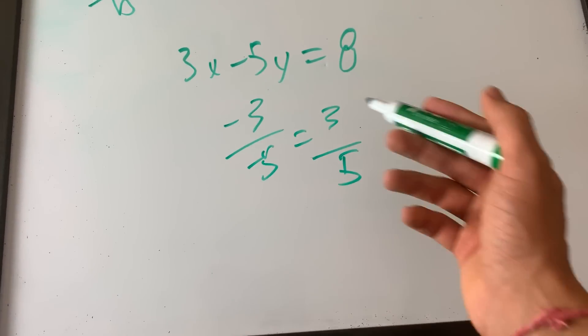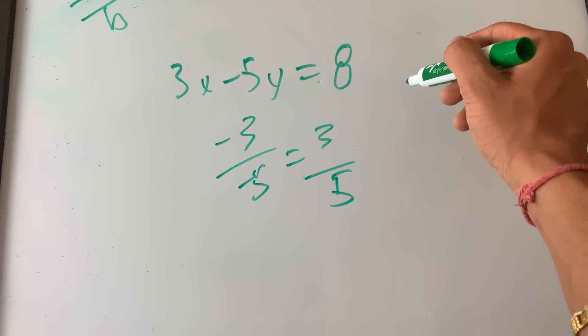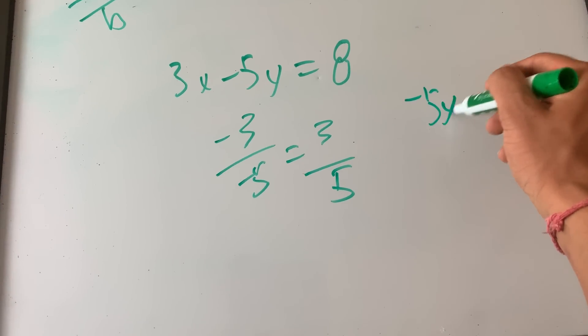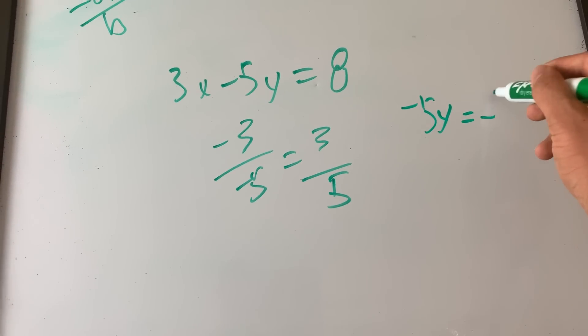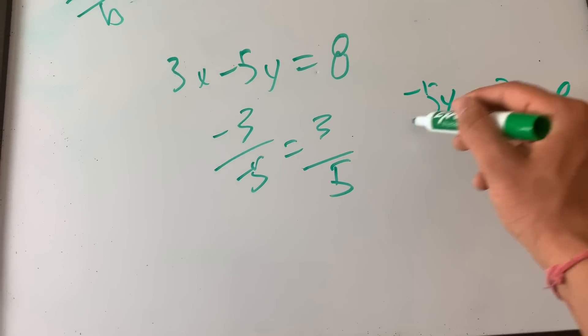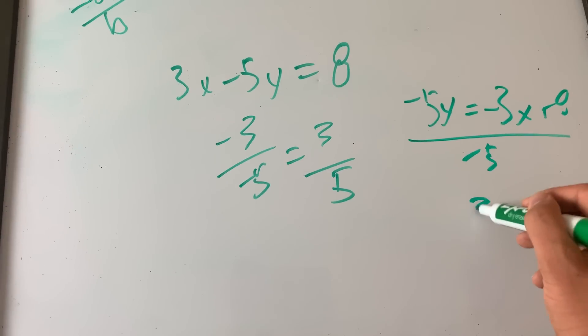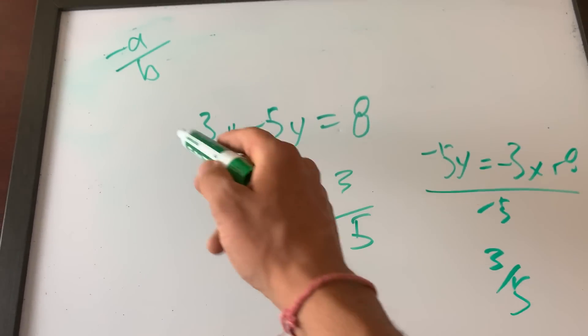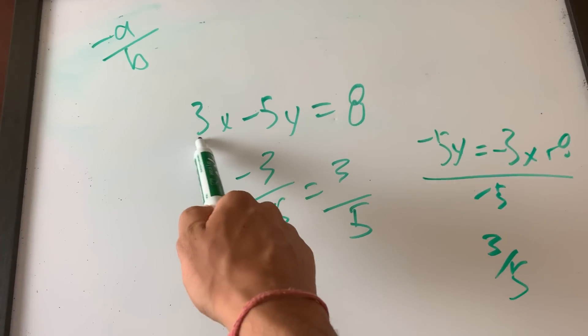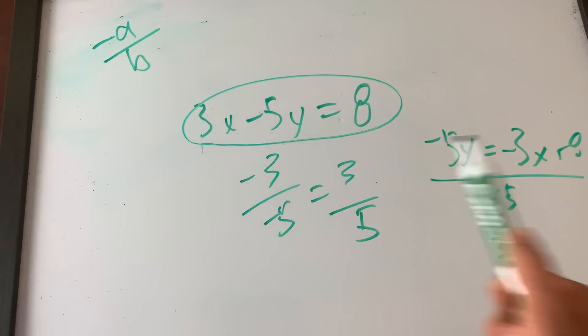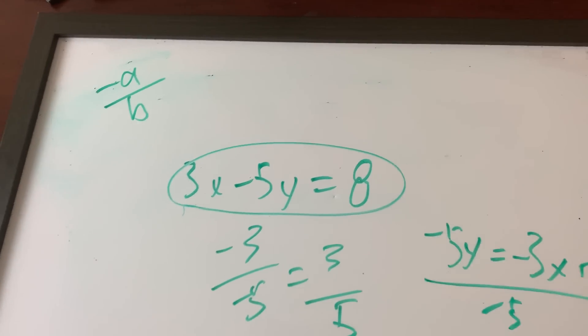The long way of doing this would just be negative 5y equals negative 3x plus 8, divide by negative 5, slope is 3 fifths. This is a faster way of getting a slope when the equation is in standard form. So it saves a lot of time and you guys need to know this.